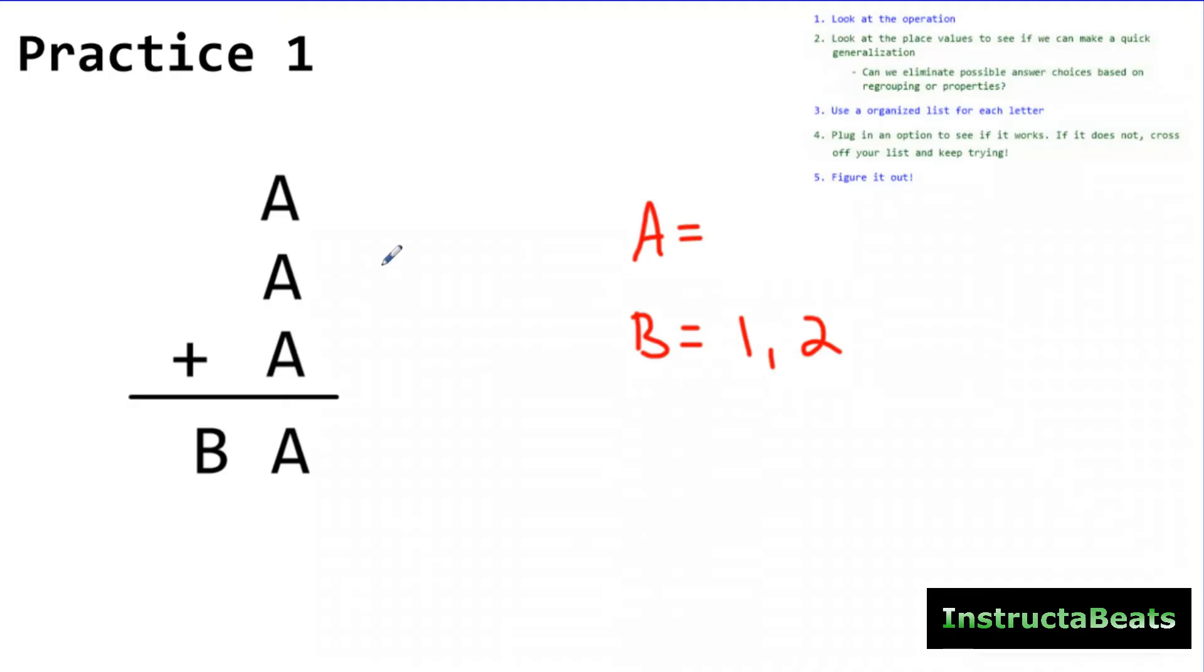Now that I've made a generalization about B and I've really narrowed my list, I can do the same thing for A. Looking at my place value, looking at my 1's place, I see that when I added the same number 3 times, I had to regroup. Which means this can't be 0. It can't be 1. It can't be 2 because 2 plus 2 plus 2 would be 6. 3 plus 3 plus 3 would be 9. So A has to be at least 4. And then it could really be any of these digits. So now just by doing steps 1 and step 2 and understanding regrouping and making quick generalizations, I've narrowed my list down tremendously.